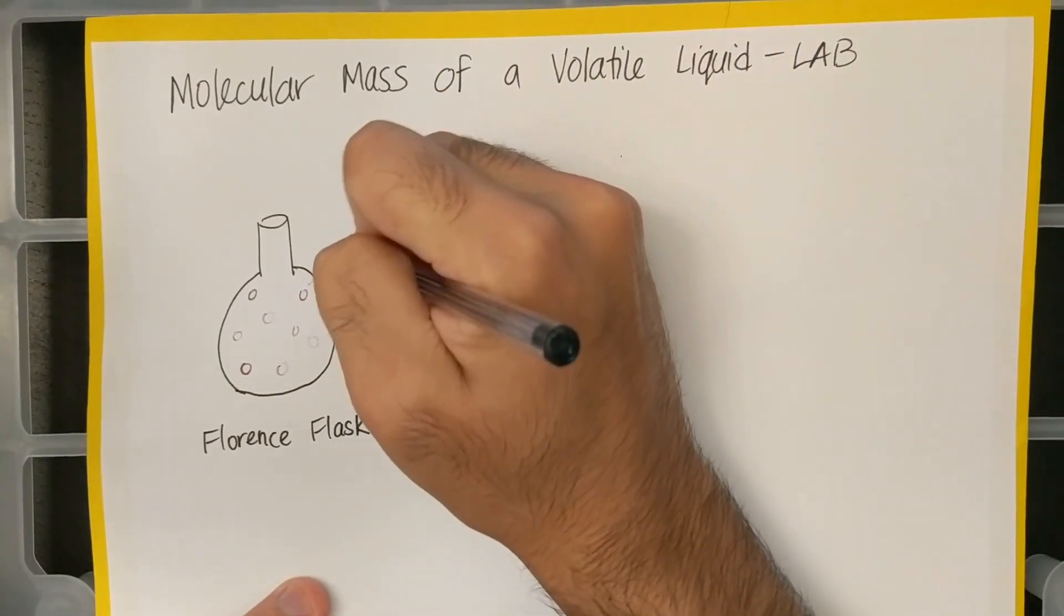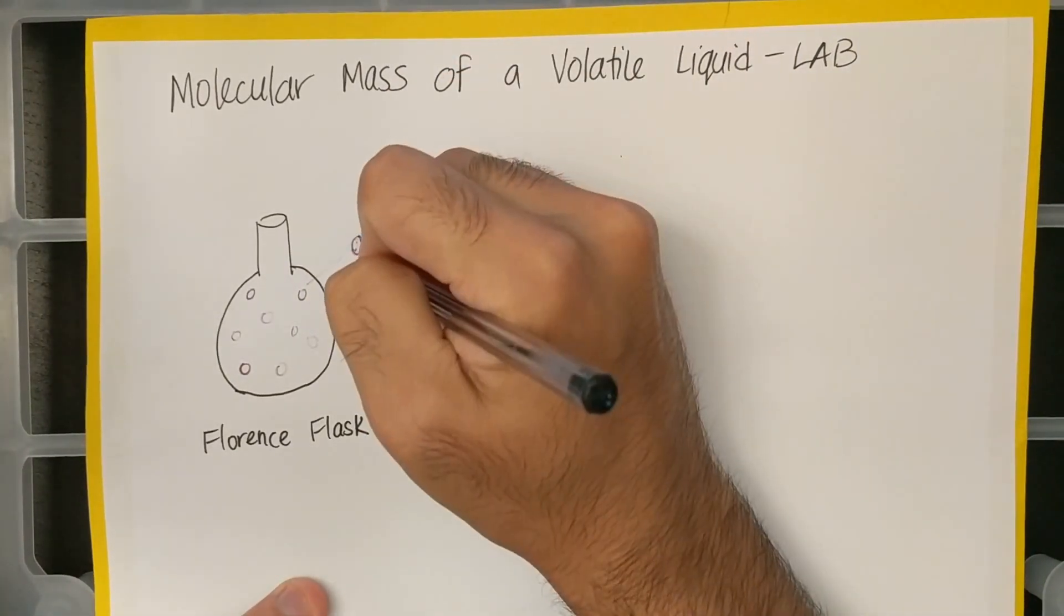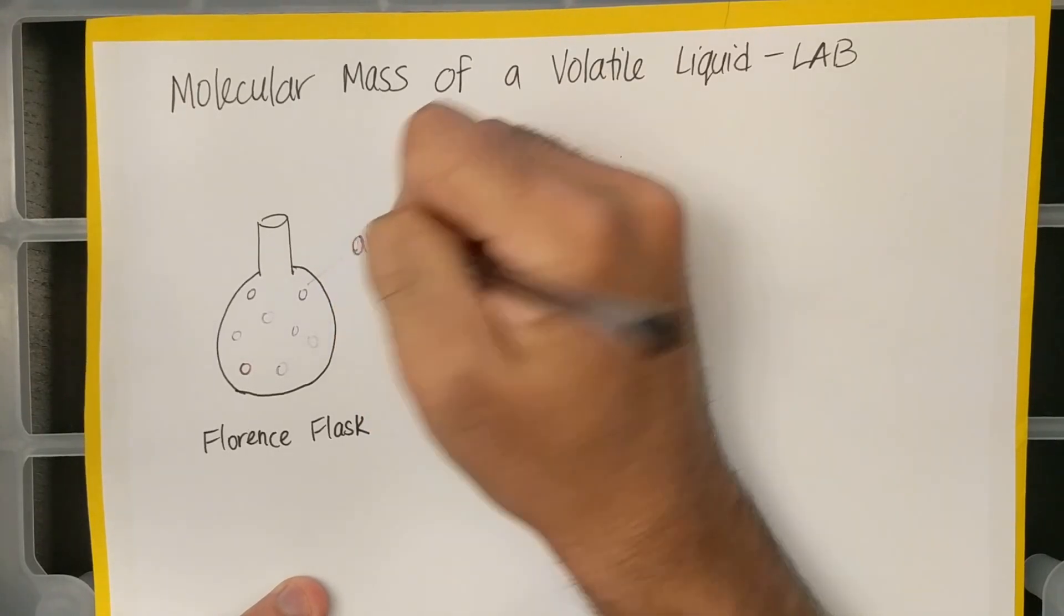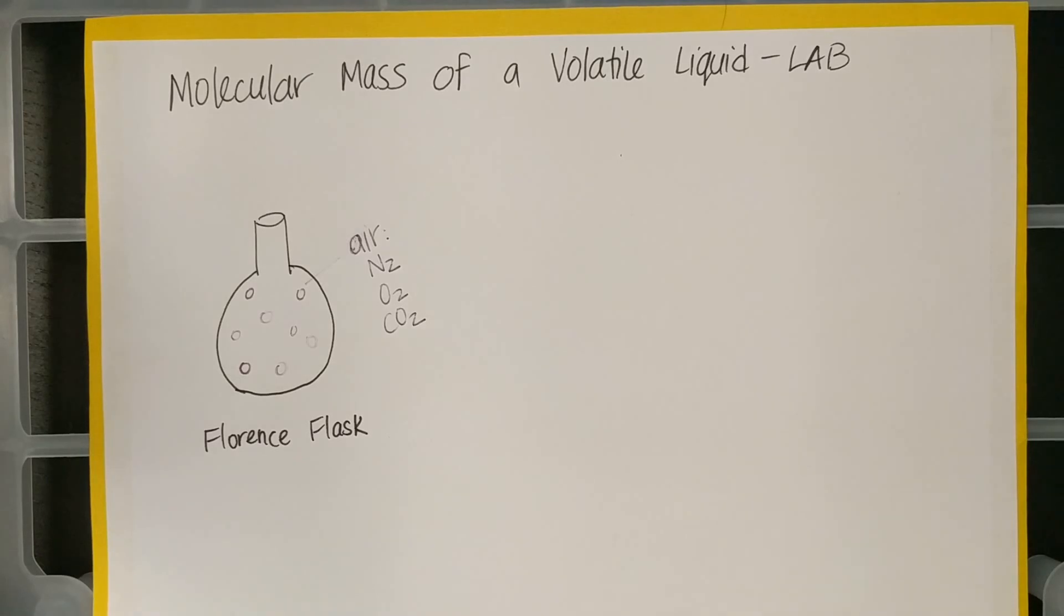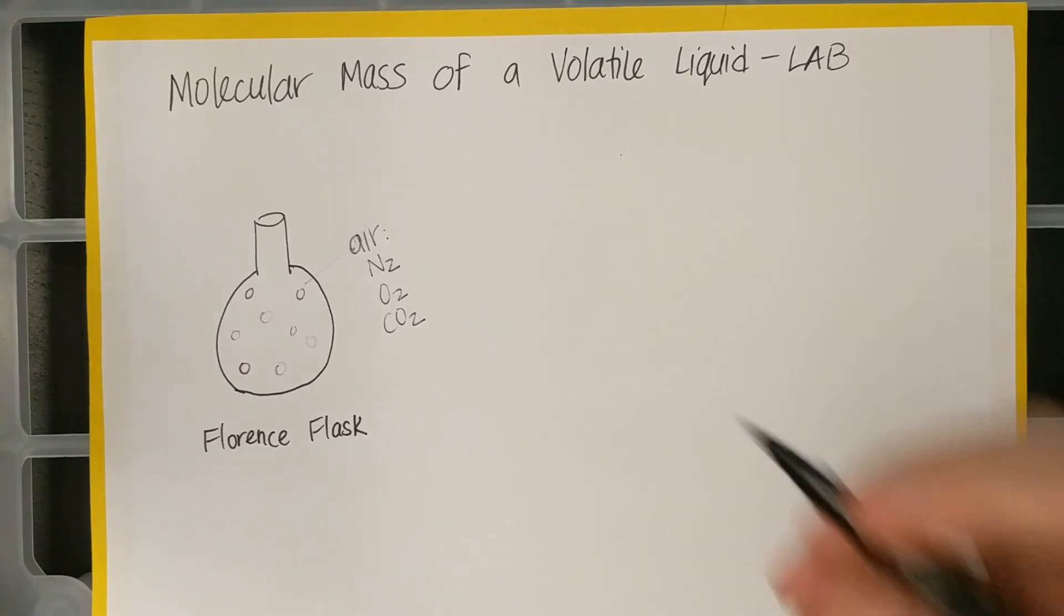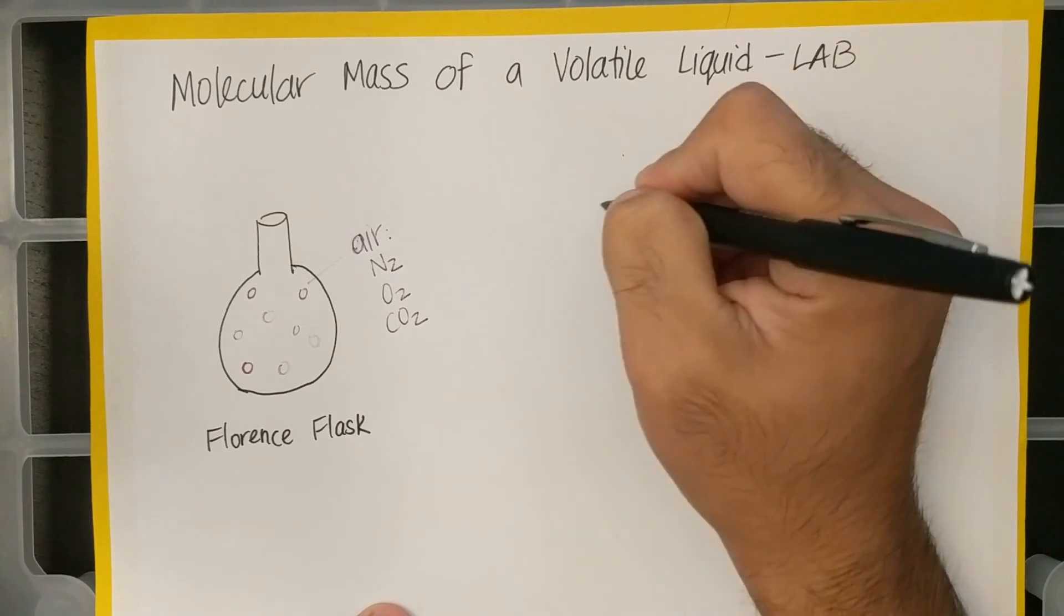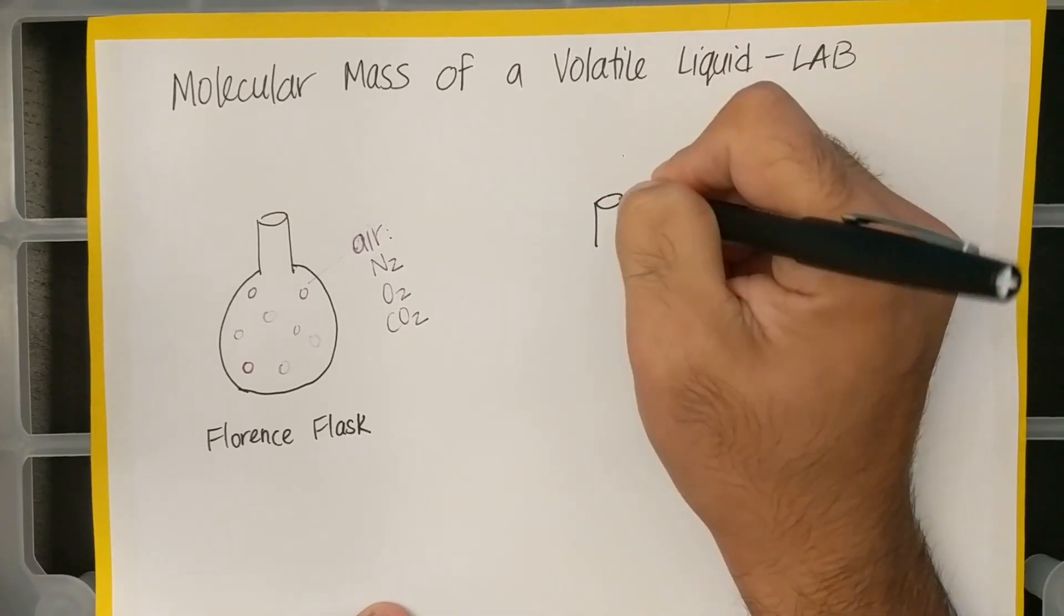So in the air we have N2, we'll have maybe some O2, some CO2. Okay, so in the flask we have air. Then later on we put our volatile liquid into the flask.